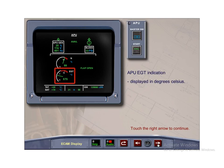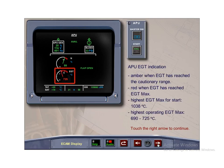The APU EGT indicator is displayed in green when the EGT is in the normal operating range. The APU EGT indication is displayed in amber when the EGT has reached the cautionary range and red when the EGT has reached EGT max. Each EGT max varies and is calculated by the ECB as a function of rotational speed during start and ambient temperature when the APU is running.